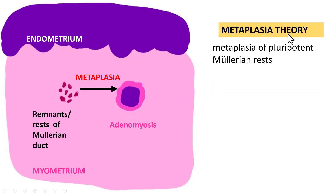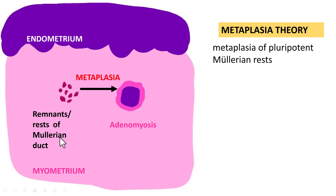The third is the metaplasia theory, where there is metaplasia of pluripotent Müllerian remnants. There can be remnants of Müllerian duct in the myometrium, and these can give rise to adenomyotic foci.